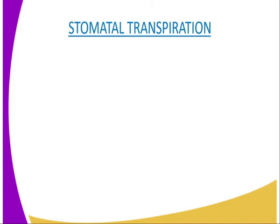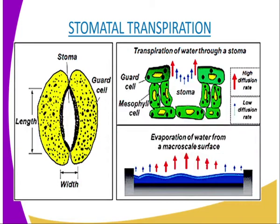The first type of transpiration that we are going to handle is the stomatal transpiration. In stomatal transpiration, there is a loss of water vapour through the stomata. It accounts for 80 to 90 percent of water transpiration in plants. Most stomata are found on the leaves, but may also occur on the epidermis of young herbaceous stems. So generally, stomatal transpiration is the loss of water vapour to the atmosphere through the stomata.